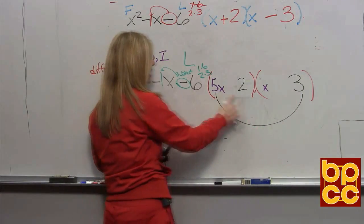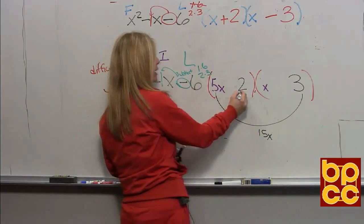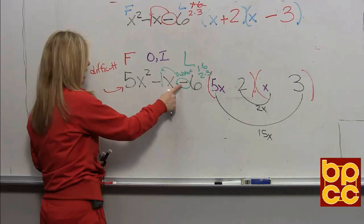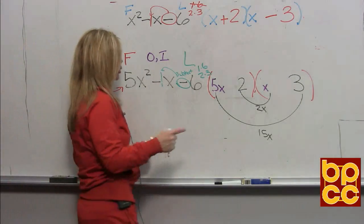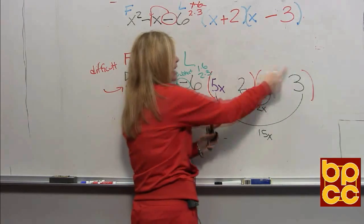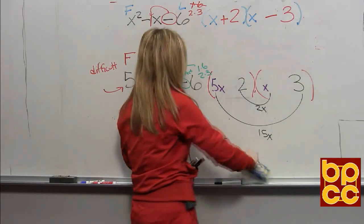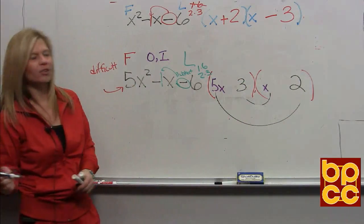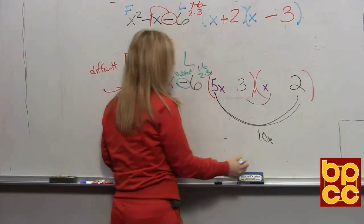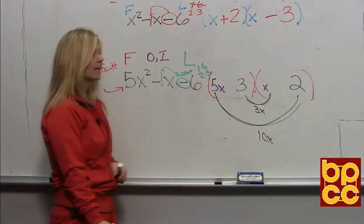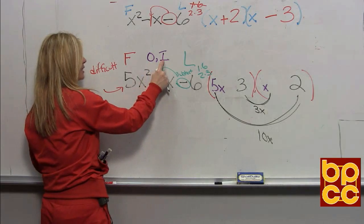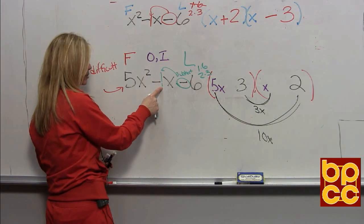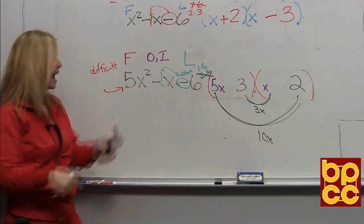Here are your outers: five x times three is fifteen x. Here are your inners: two times x is two x. Will this outer fifteen x and this inner two x subtract to make one? No, it will not. So now you're going to switch these numbers. By switching these numbers, you will get different inner and outer terms. If I switch the two and the three, the outers now are five x times two, which is ten x, and the inners are three times x, which is three x. Will the outers and inners make this middle? No — ten x and three x do not subtract to make one x. So the two and three do not work. Now you've got to play with the one and the six.